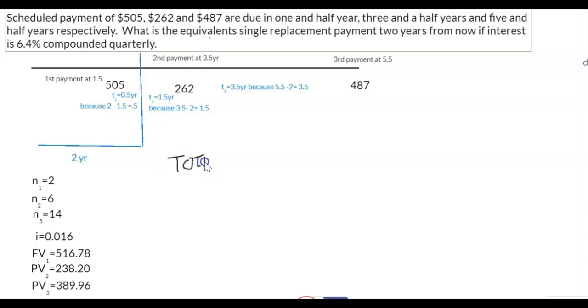So the total is equal to your FV1 which you now have, plus your PV2 which you have just figured out, plus your PV3. All the money is at exactly the same time.